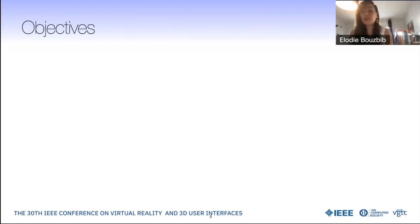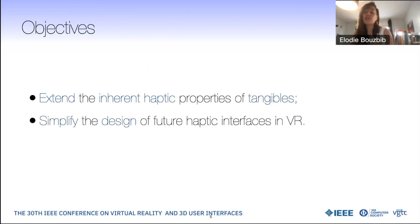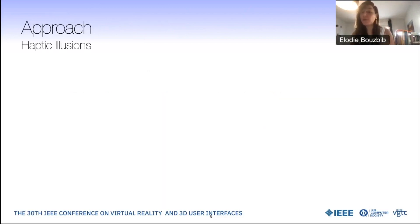The main objective of this work are to extend the inherent haptic properties of tangibles and to simplify the design of virtual haptic interfaces in VR. To do so, I promoted an approach called pseudo-haptics or haptic illusions. Haptic illusions leverage the user's vision and its dominance over haptics to provide different haptic perceptions. It is referred to as illusions and is not perceivable by the user.